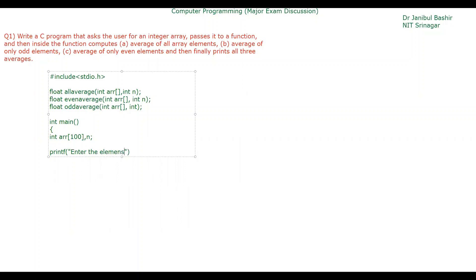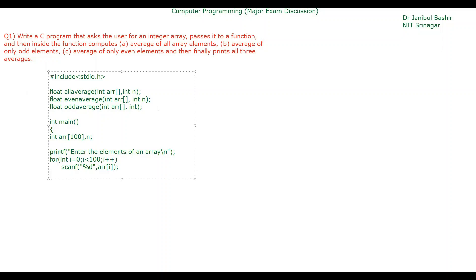We print a message asking the user to enter the elements of an array. Then we run a for loop to take 100 elements as input using scanf with %d, storing each element in the array. Up to this point, the first part of the question is done — the user has entered the integer array.